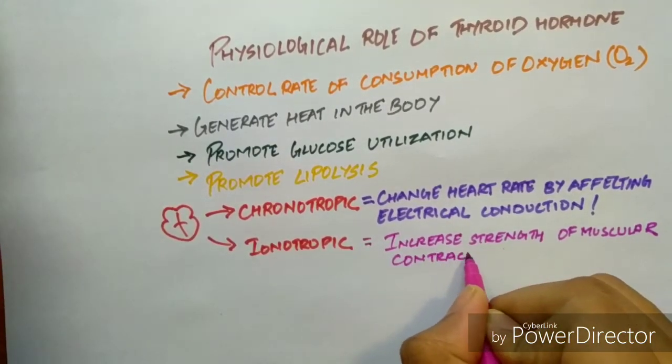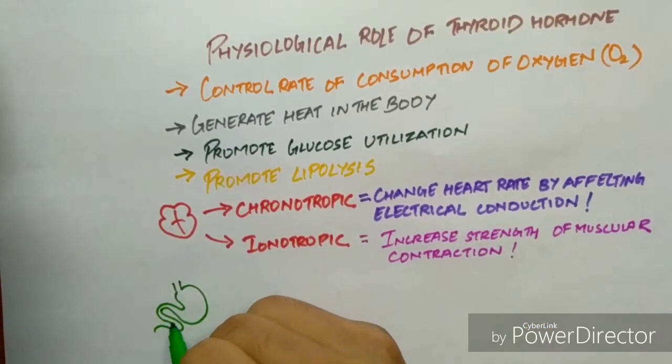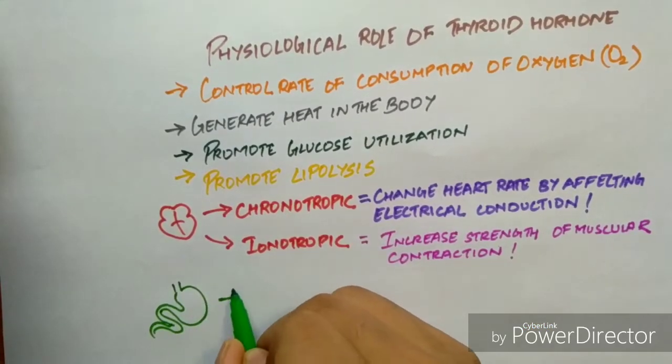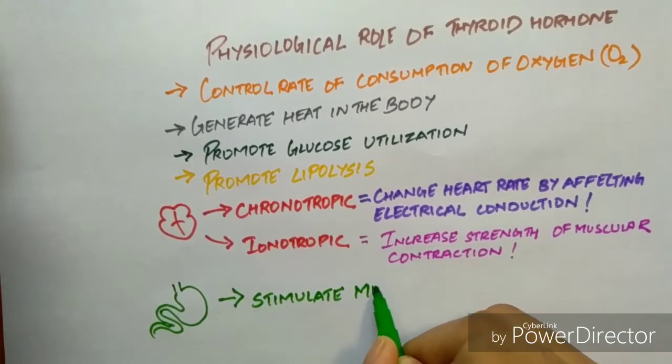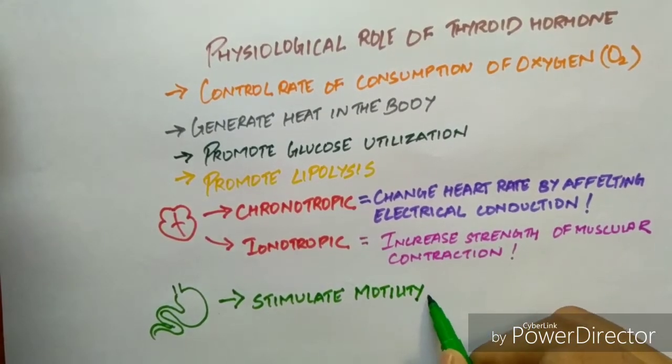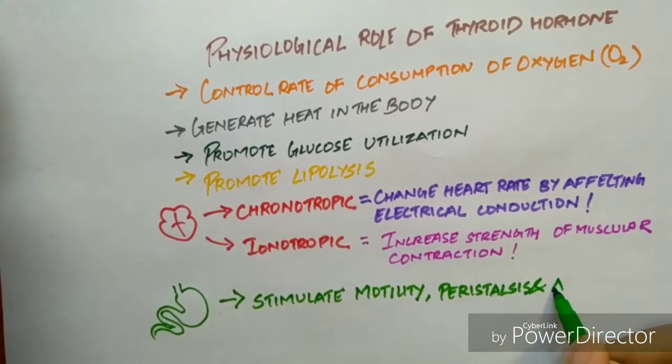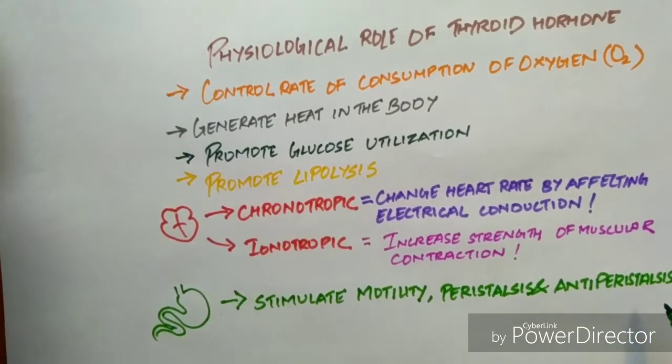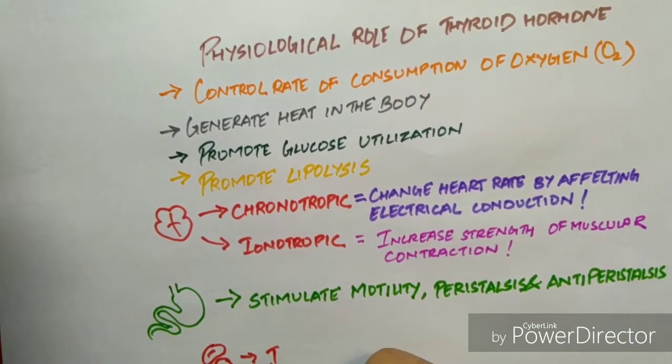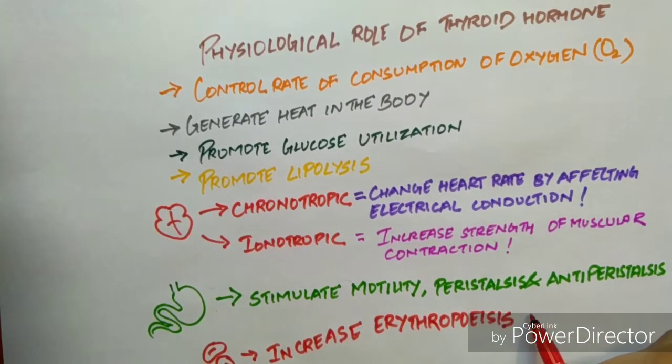For GIT, it affects by stimulating both peristalsis and antiperistalsis, which are the main motility. And finally, it also increases the blood count, that is erythropoiesis.